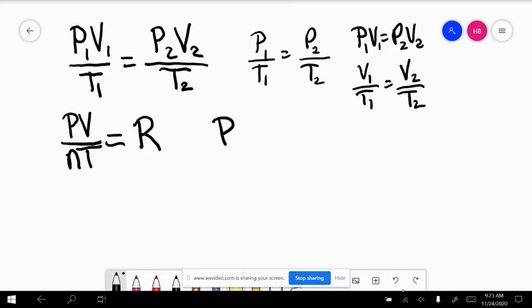So now here's where we get the ideal gas law. I'm going to rearrange this formula, and it says PV equals nRT, and this is the ideal gas law.